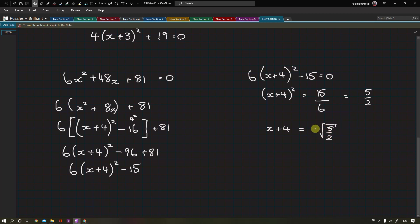When we take the square root, remember there are two numbers: the positive and the negative version. This is important—this is why we get two answers. Then we can subtract 4 from both sides and we get -4 ± √(5/2).